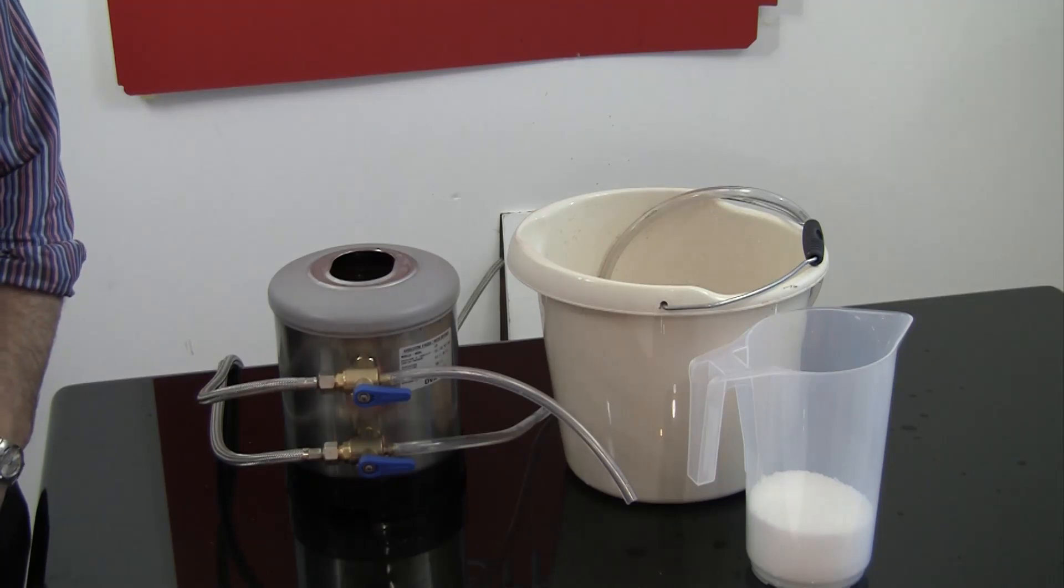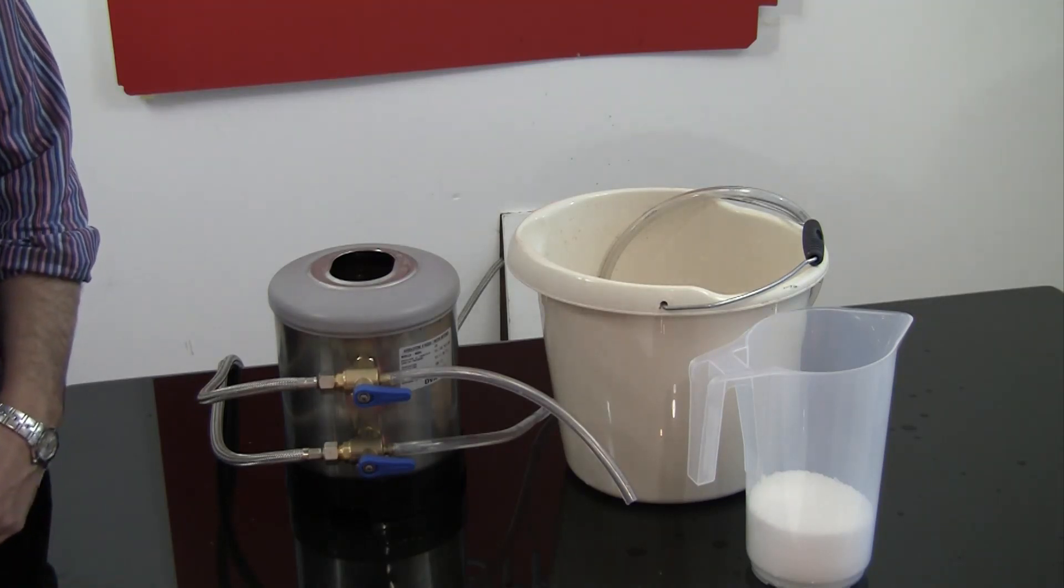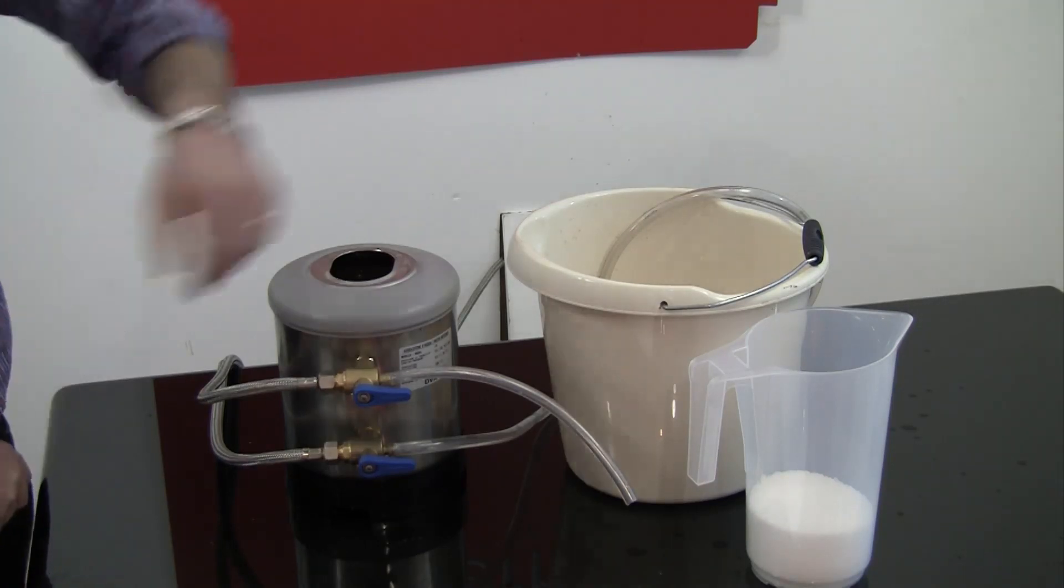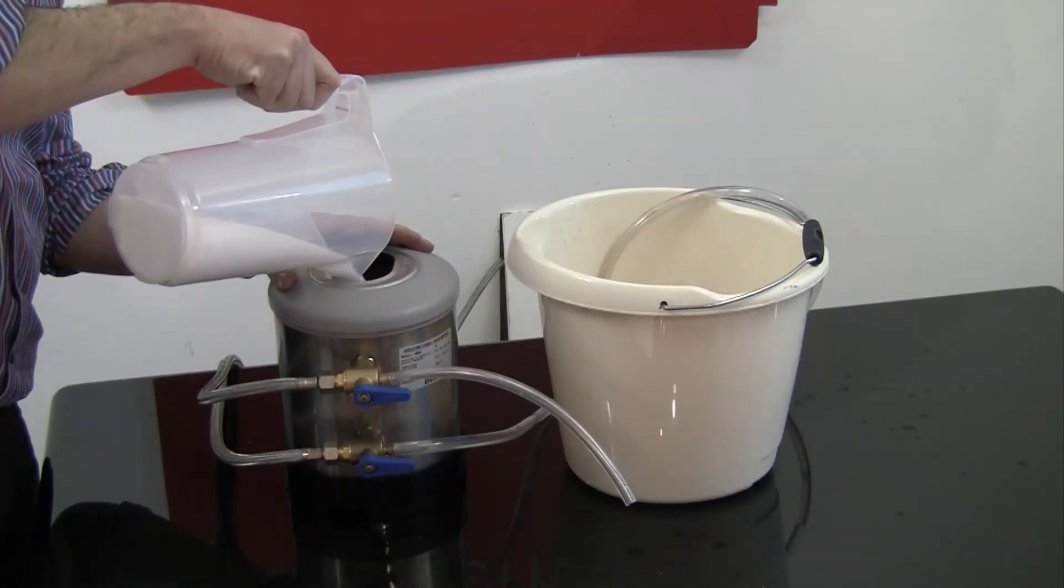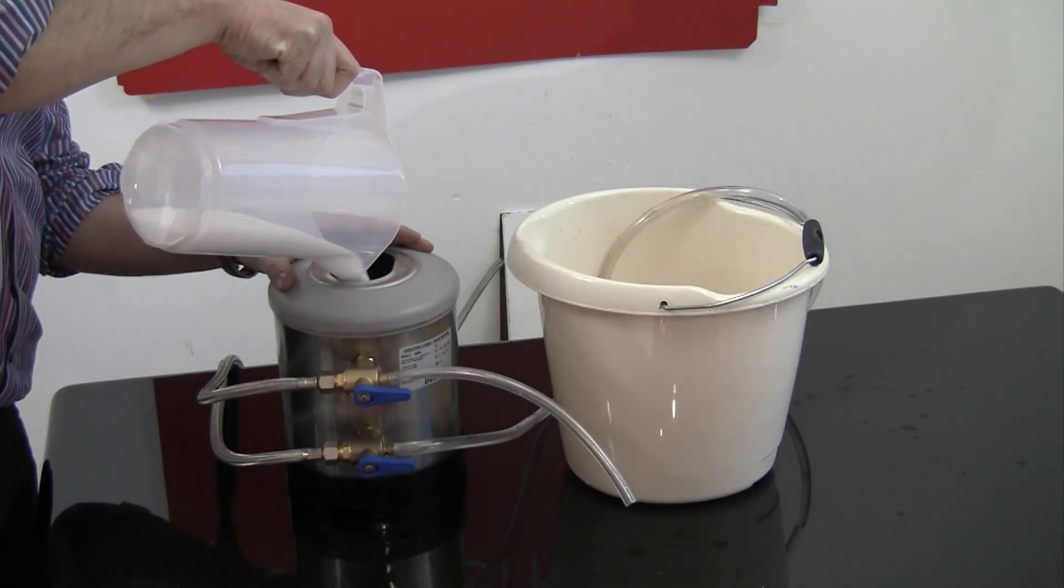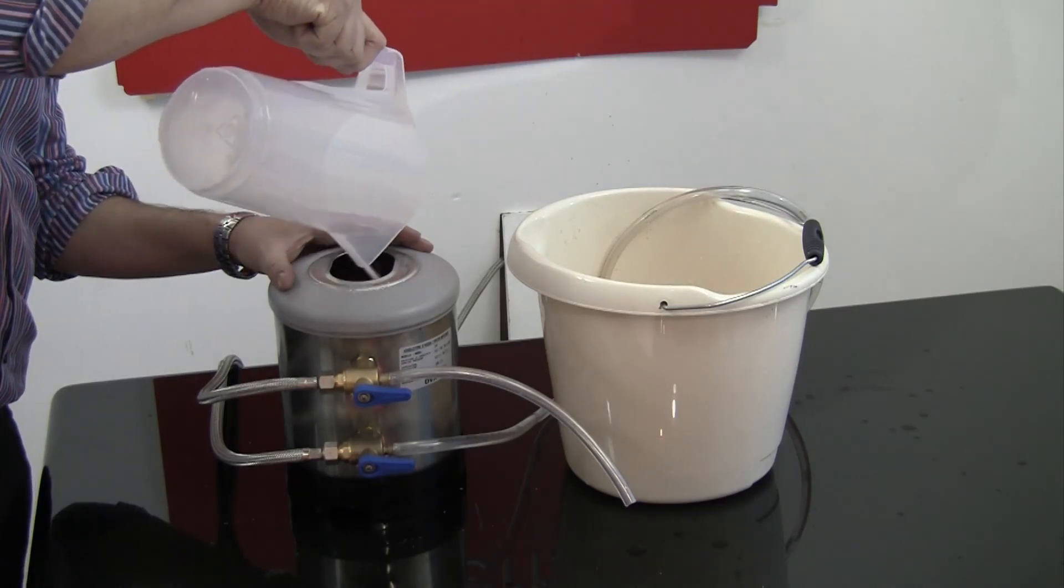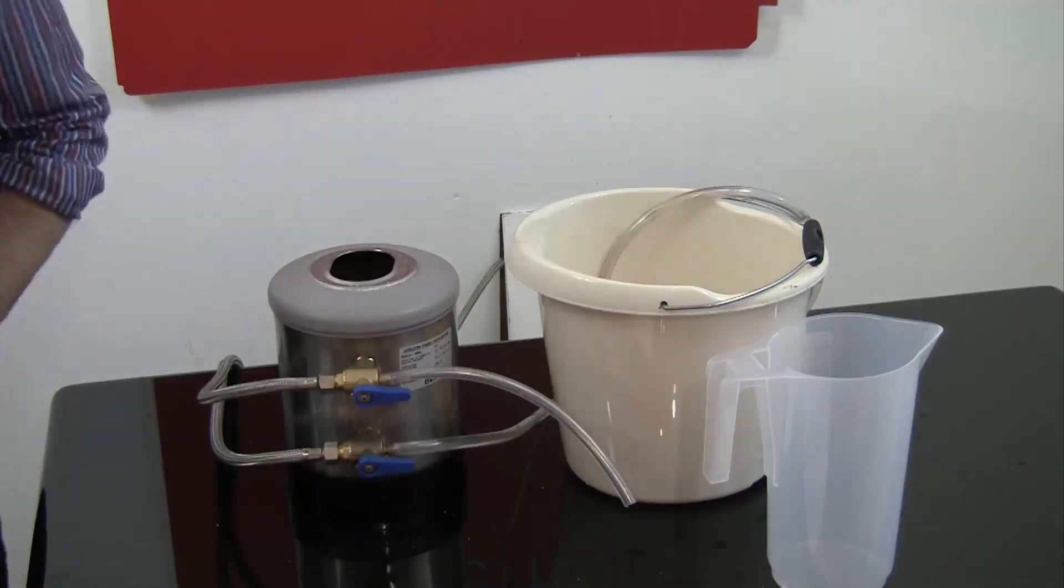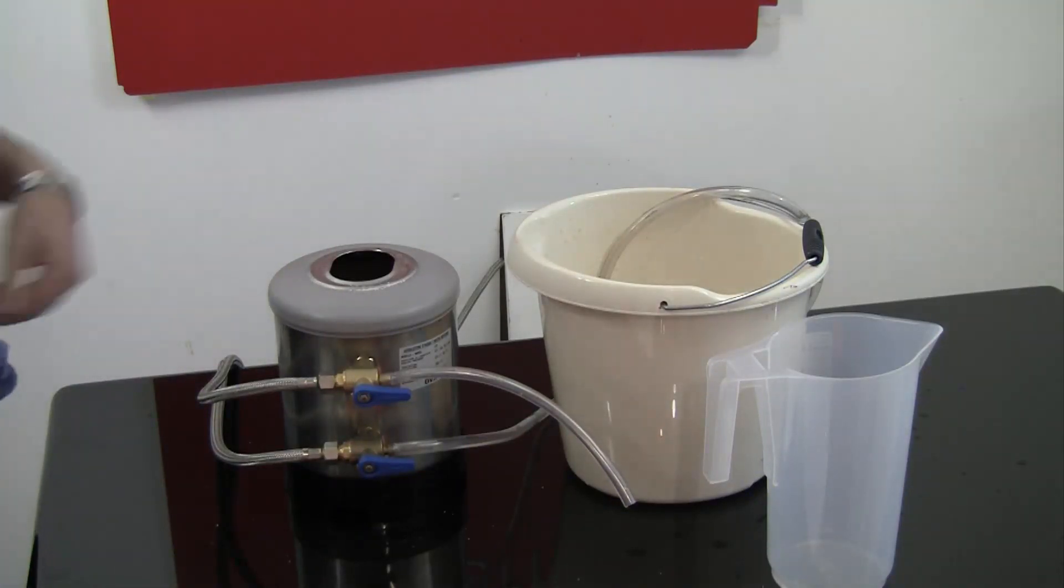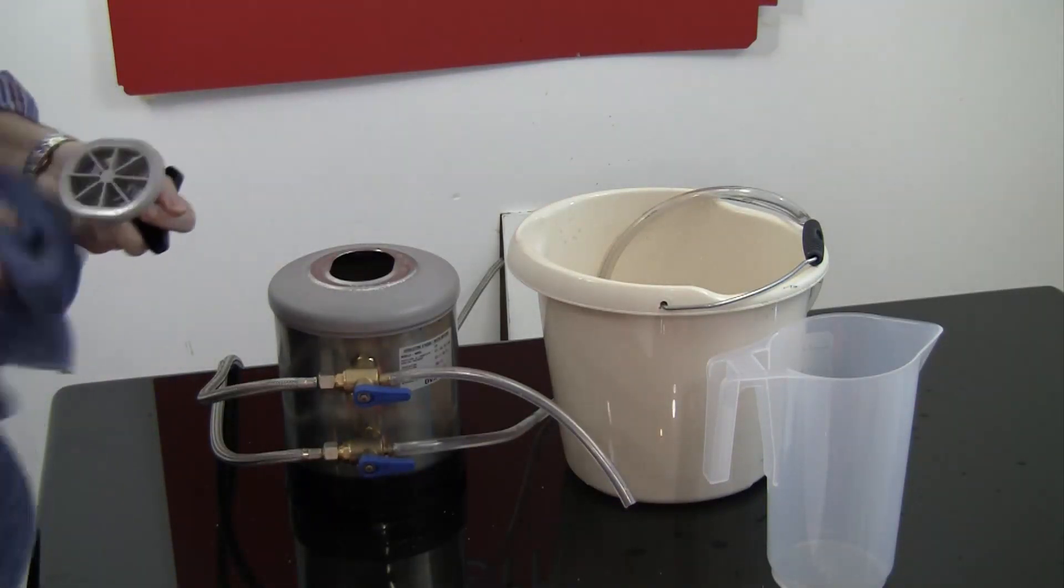Step six is to pour half a kilo of dishwasher salt on top of the resin. Clean the lid and replace.